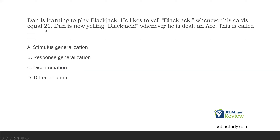Question five. Dan is learning to play blackjack. He likes to yell 'blackjack' whenever his cards equal 21. Dan is now yelling 'blackjack' whenever he's dealt an ace. What is this called? Clearly some sort of generalization is going on — he learned blackjack equals 21, and now he's just yelling it whenever he gets an ace. Can we eliminate discrimination? Certainly — there's a difference between 21 and being dealt an ace. Is response differentiation occurring? No — response differentiation involves two different responses; this is the same response over and over. So discrimination and differentiation are not occurring.